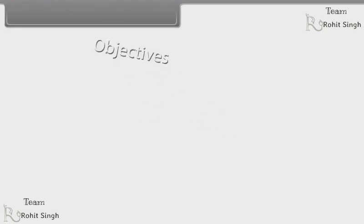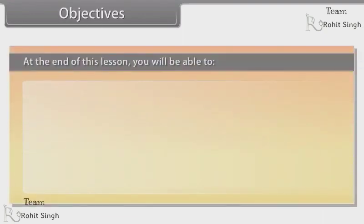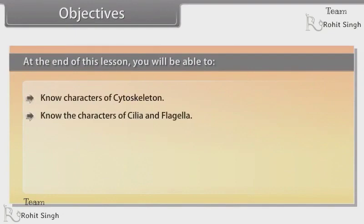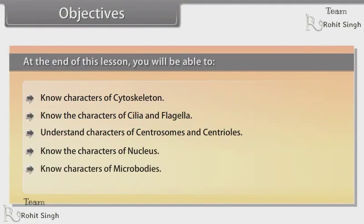Objectives. At the end of this lesson, you will be able to: know the characters of cytoskeleton; know the characters of cilia and flagella; understand the characters of centrosomes and centrioles; know the characters of nucleus; and know the characters of microbodies.